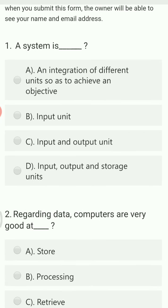A system is: option A, an integration of different units so as to achieve an objective; option B, input unit; option C, input and output unit; option D, input, output and storage units. Basically, a system has all things integrated so that they coordinate and communicate with each other for a common goal or objective.